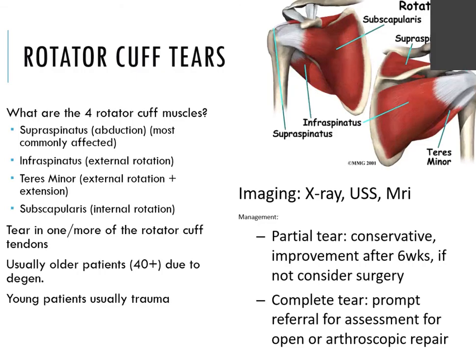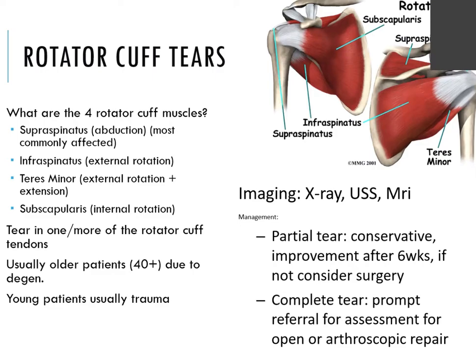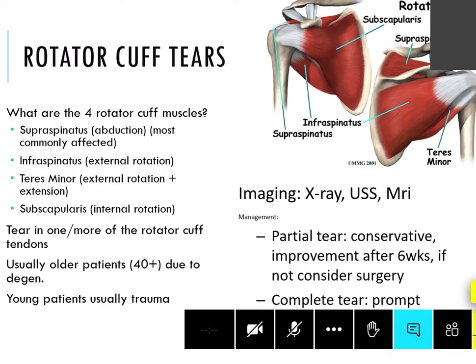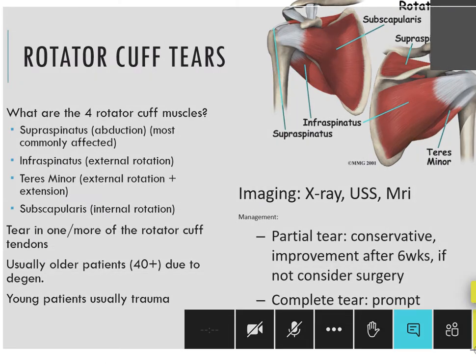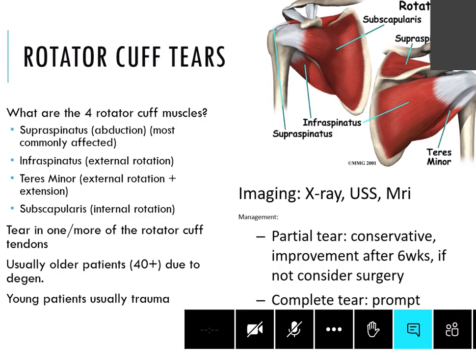What often comes with impingement is rotator cuff tears — just remember those muscles and the likely cause based on age. In older patients it can be due to degeneration and those muscles not being well developed anymore, whereas in younger patients it's trauma from sporting injuries. The question of management in partial versus complete tears will often come up.